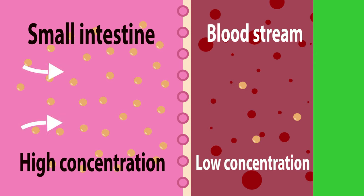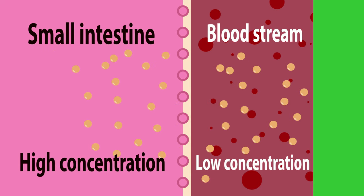So the sugar moves down its concentration gradient from a high concentration in the small intestine through the holes in the villi into the blood capillary where it's in low concentration. Sugar, amino acids, fatty acids, and glycerol all use diffusion to move into the blood within the small intestine.